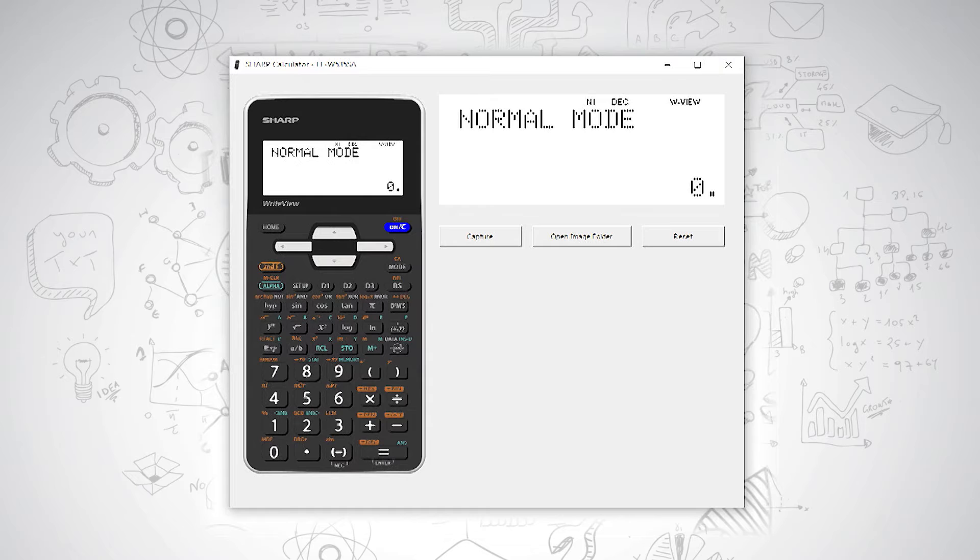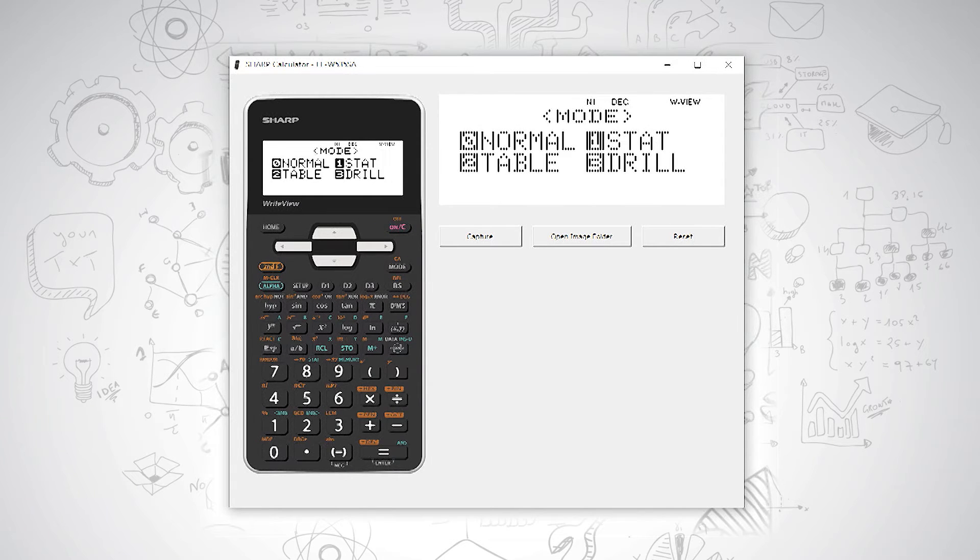Drill Mode. On your Sharp 535, you have a drill mode. To access your drill mode, press load and then press three.